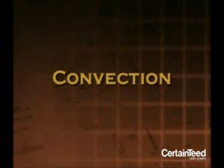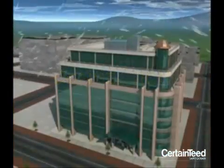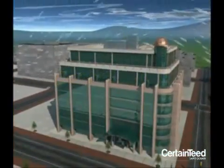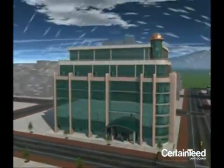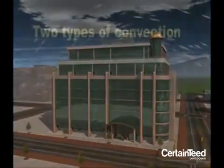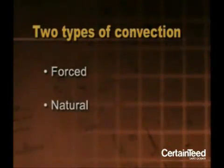Convection is the second mode of heat transfer. Heat transfer by convection occurs as a result of movement of liquid or gas over a surface. Wind blowing against a building is an example of a gas moving over a surface. There are two types of convection: forced and natural.